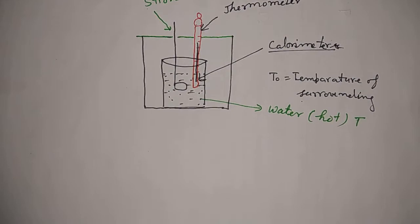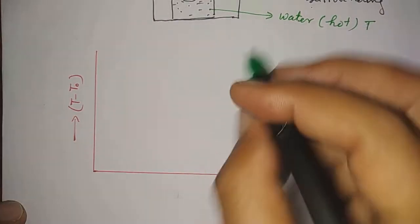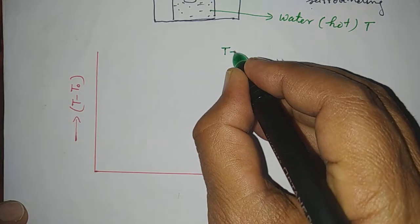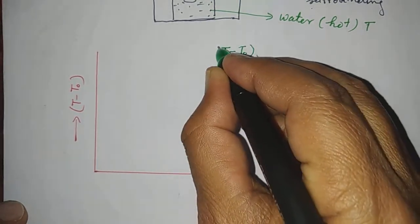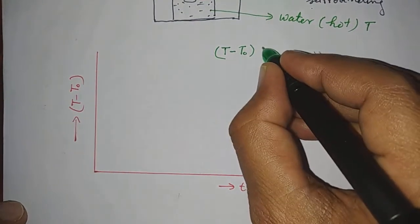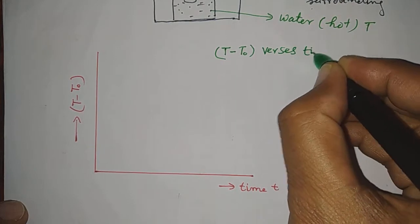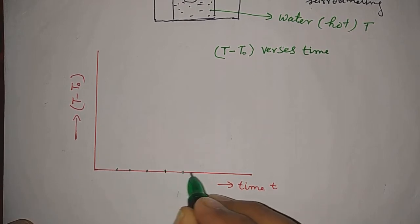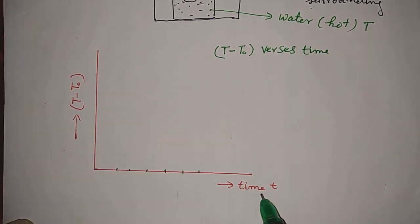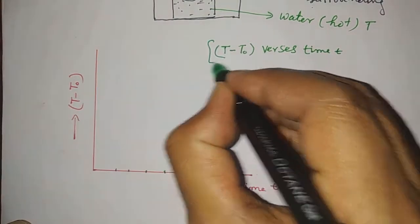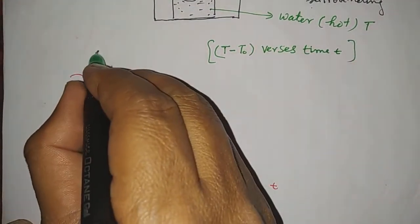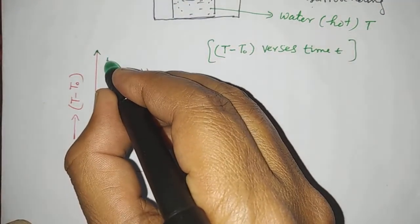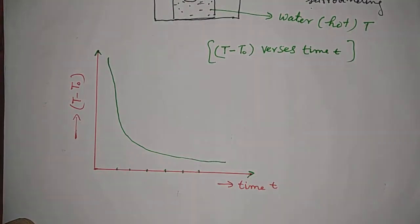A graph is plotted between temperature difference (T minus T0) on the y-axis and time on the x-axis. At every interval of time, the temperature difference is noted. After putting all the points, a curve is obtained between point A and point B.